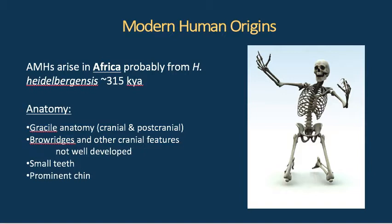We end up with a prominent chin. The chin is something that is unique to modern humans — no other species of hominin has a chin. We're not exactly sure why humans ended up with chins, but it might have something to do with the overall shrinking of all of the teeth. Basically, all of the teeth got smaller, the jaw couldn't change as quickly as tooth size, and so we ended up with this extra bit of bone where our chin is.